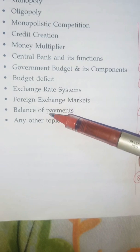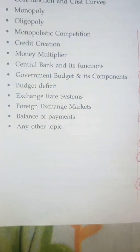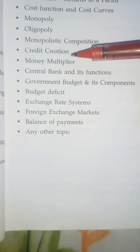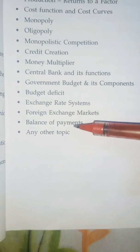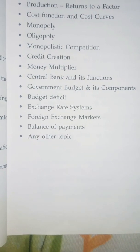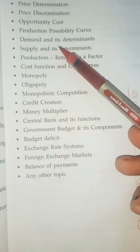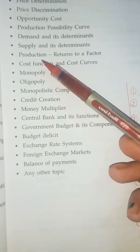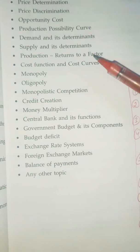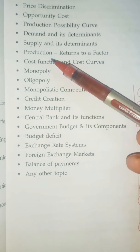You can also take a topic from micro economics. For example, from Chapter 1 there is classification of goods. From micro, you can take topics like opportunity cost, production possibility curve, demand and its determinants, supply, or production. These are 11th class topics that 11th students can take. 12th students can also take them, though it may not be as suitable.